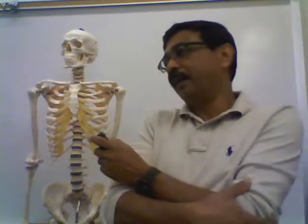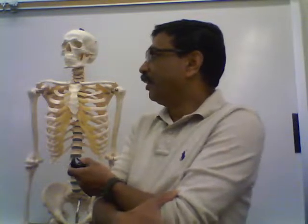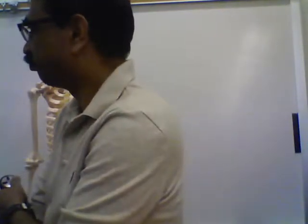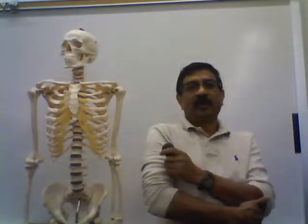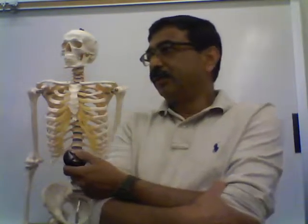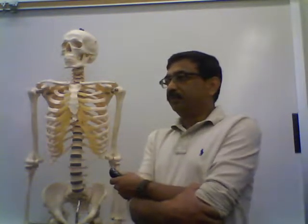In the skull, you have cranial and facial bones. There are 8 cranial bones and 14 facial bones. Cranial bones join together to form a cavity called the cranial cavity, in which the most important organ, the brain, is located. Protecting the brain is the main function of the cranial bones.